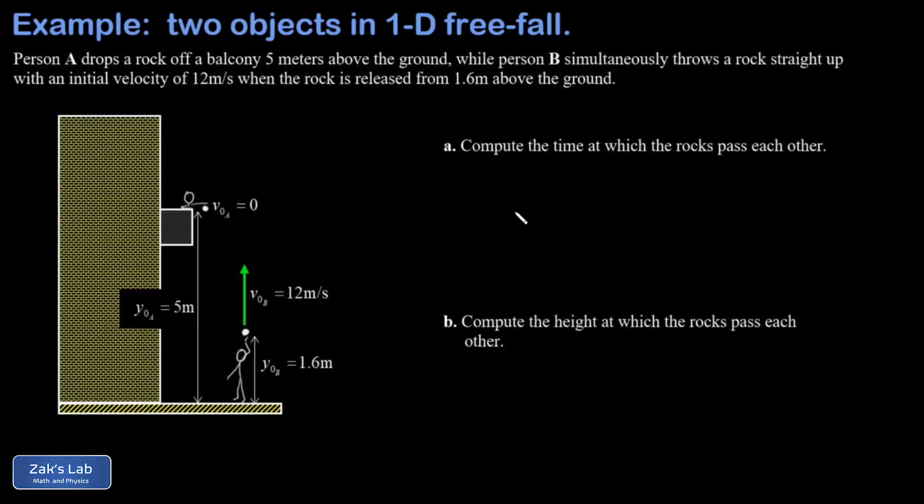We can then set the two positions equal and find out what time it is. Just to be clear about the origin, we're going to put the origin at ground level and call upward positive. Then I need to get a position function for each of these rocks.